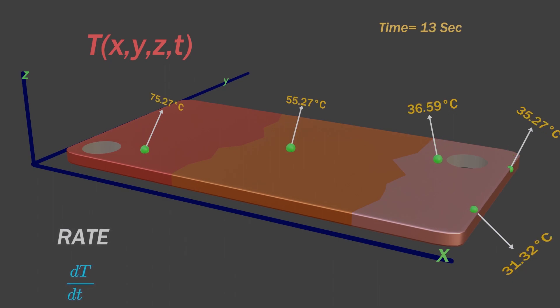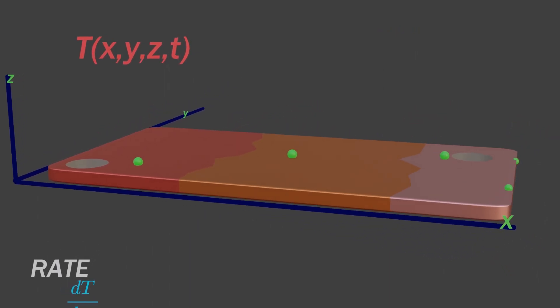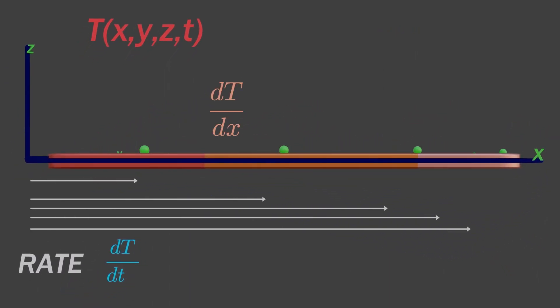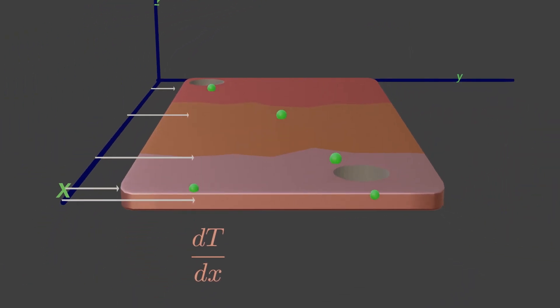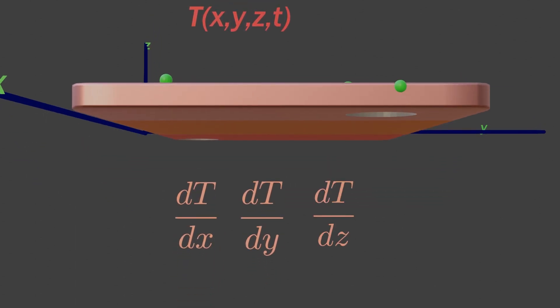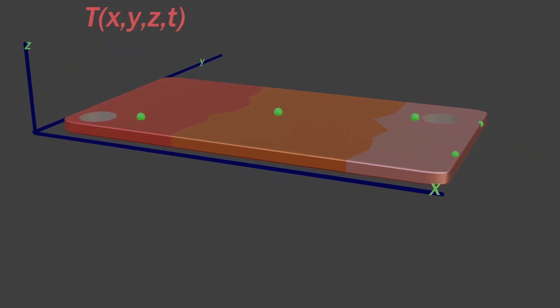But the temperature is also different at different positions. Temperature changes along the length of plate, along the breadth, and along the height. Now, sum up these equations, you will get a temperature gradient.